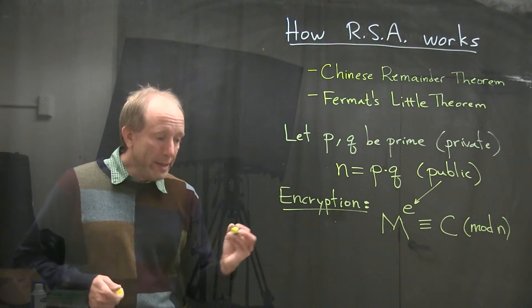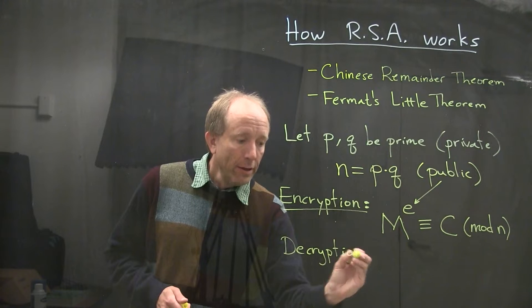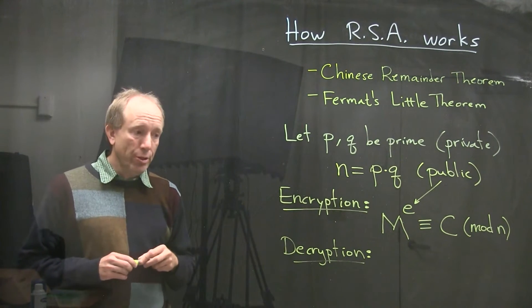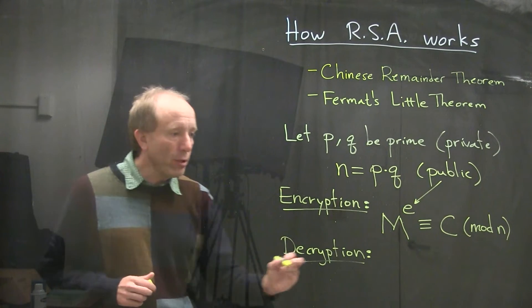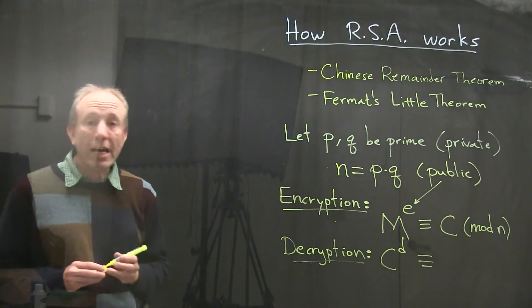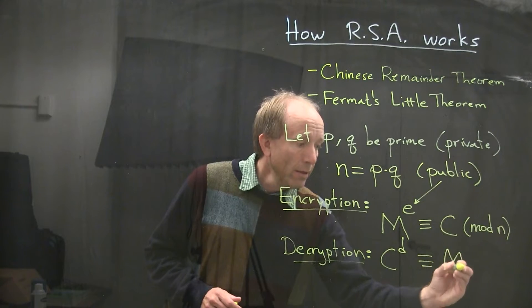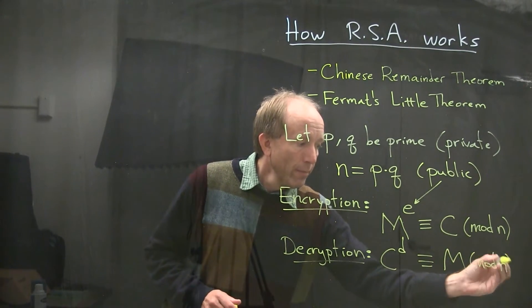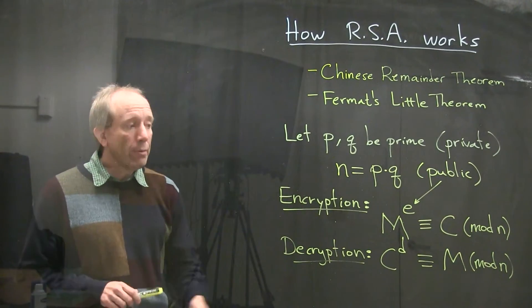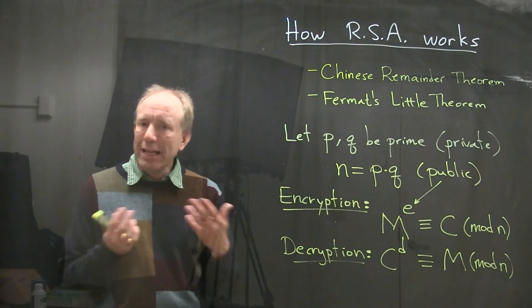Now, the decryption process is something that only the person with the private keys P and Q is able to do. And that's because it requires a person to raise the ciphertext to another power, which I'm going to call D. And once that gets reduced, the result will be the original message M when I reduce it in mod N again. But what is D? And how is D related to E?